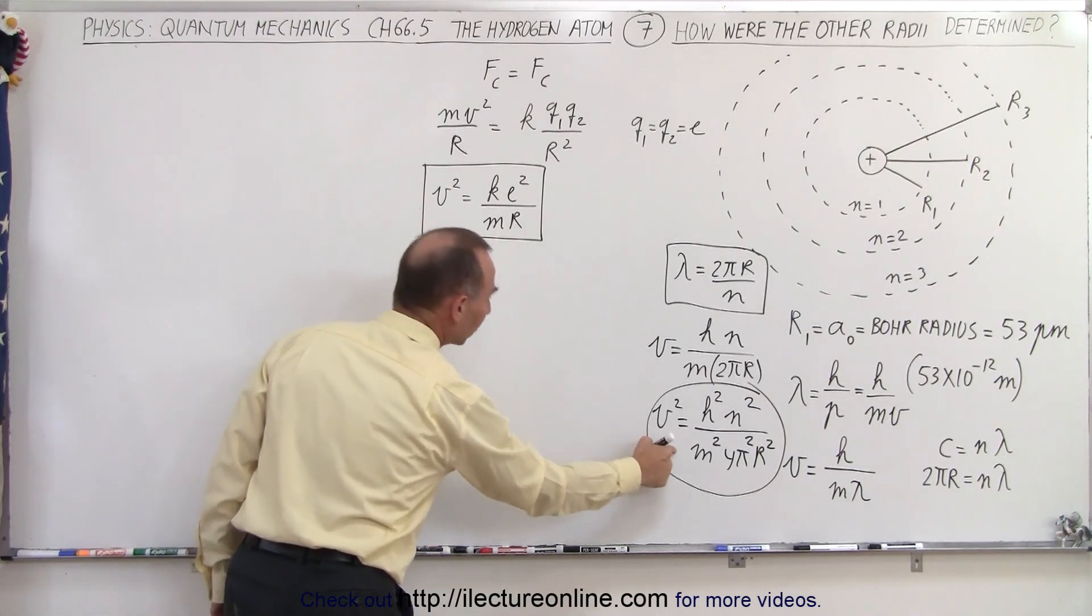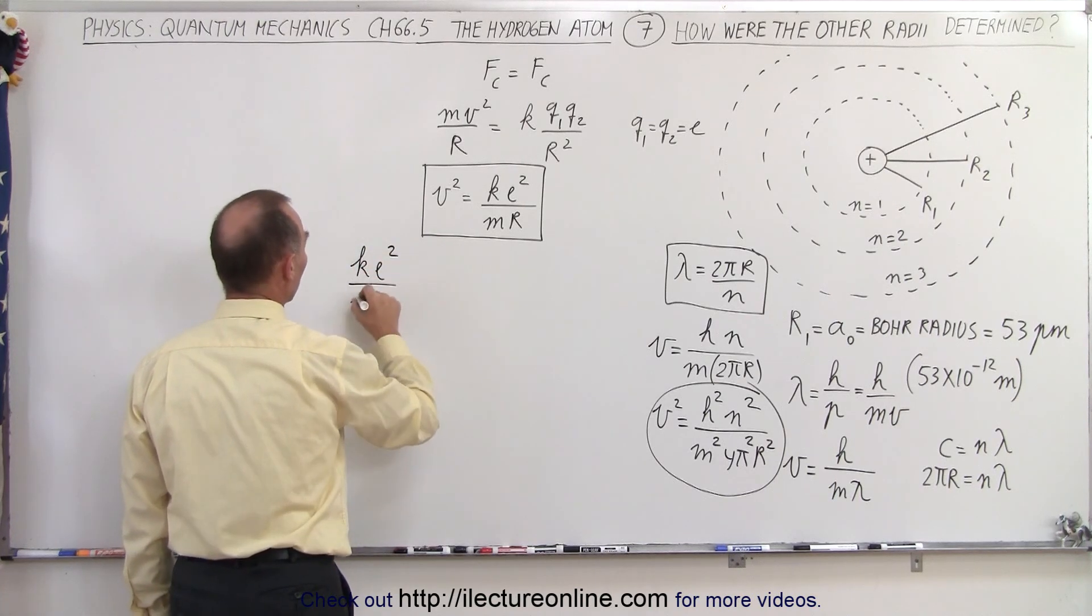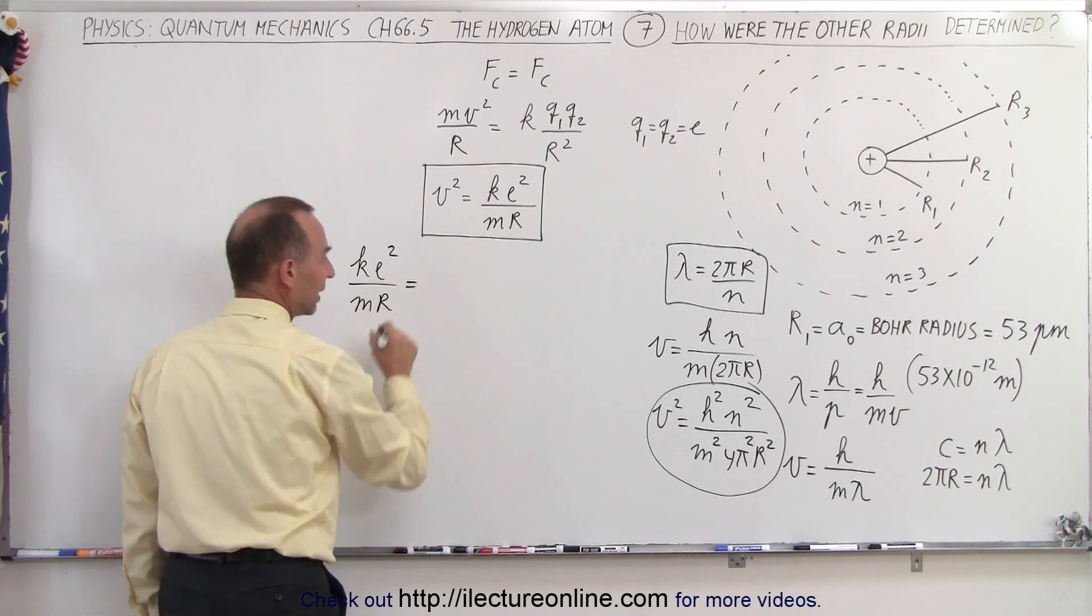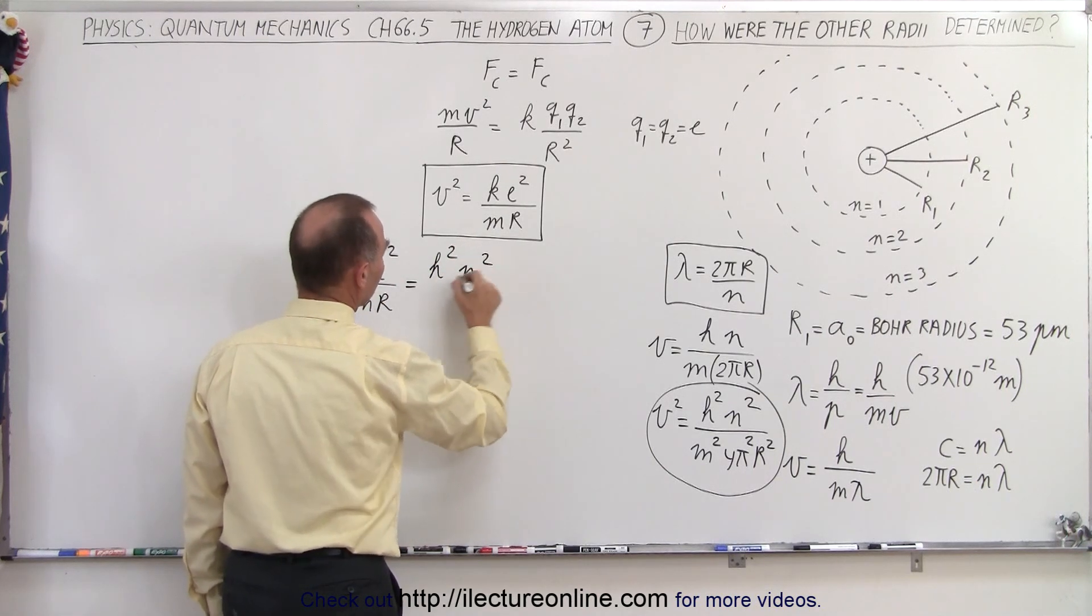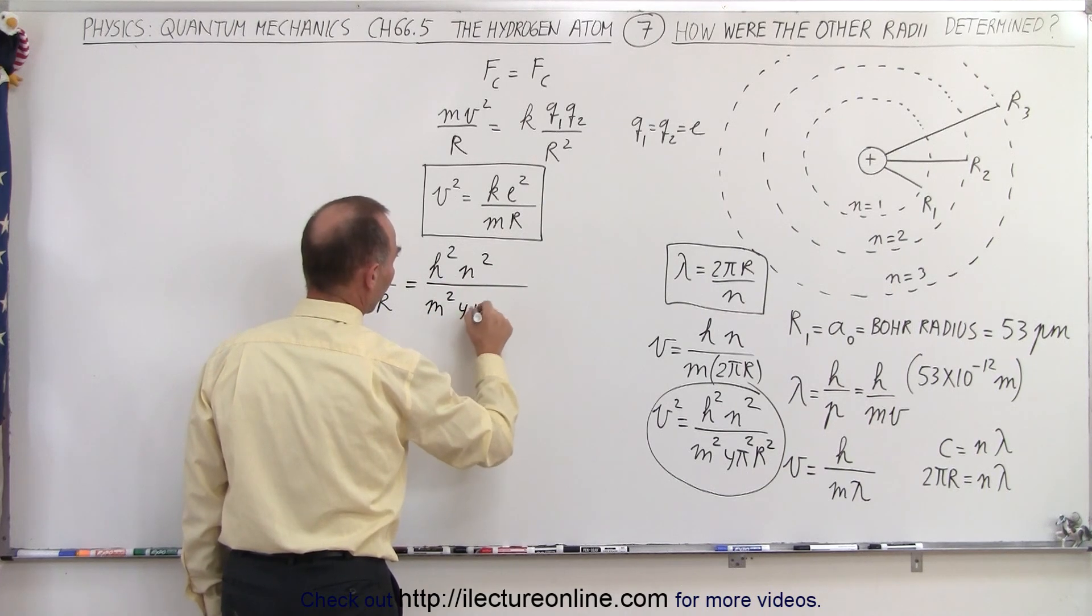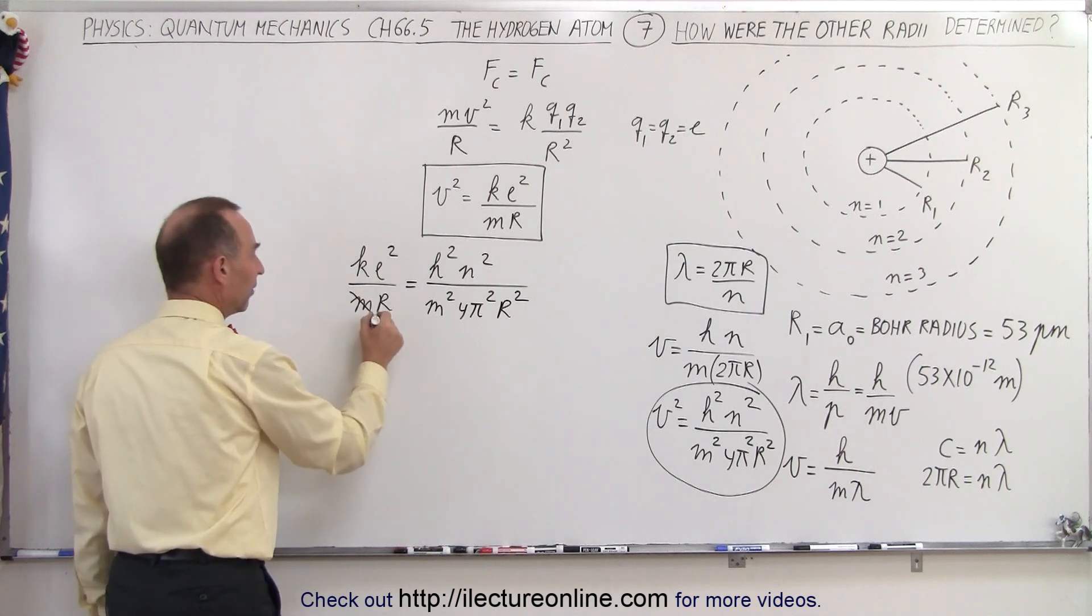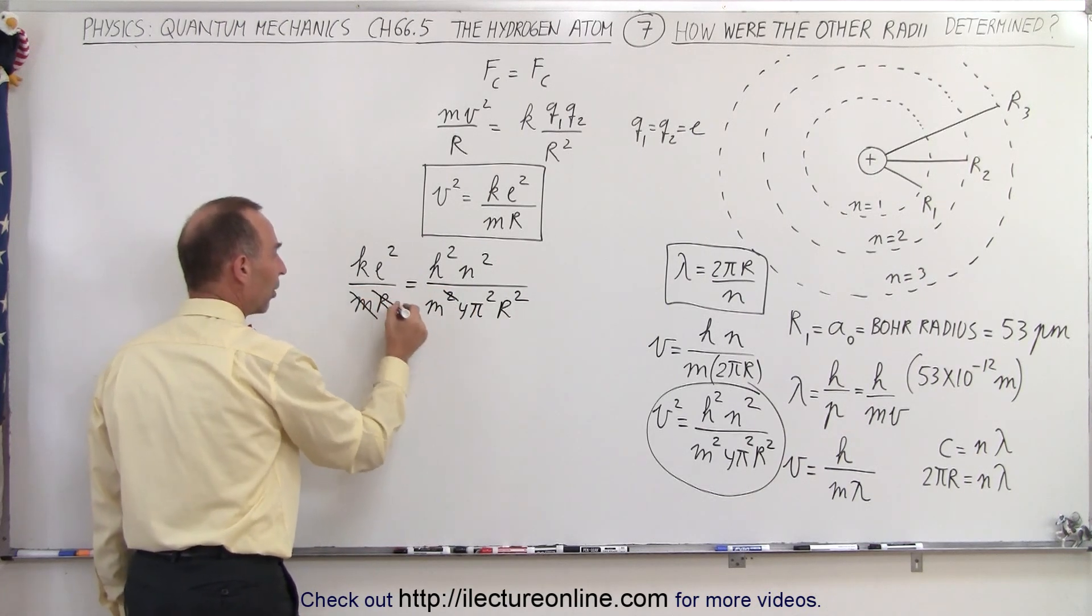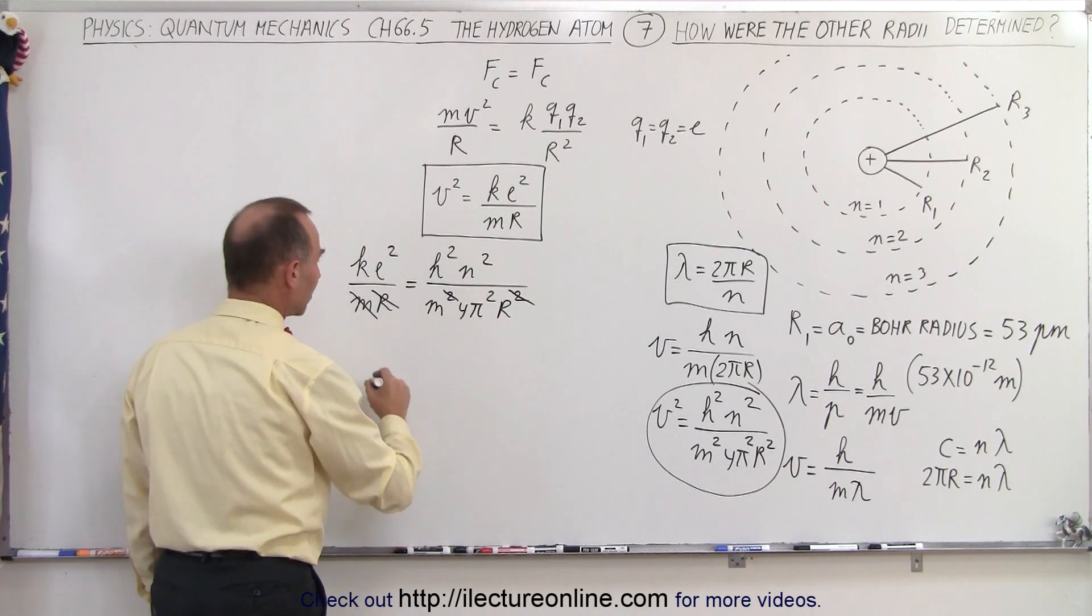So setting this equation equal to this equation, we can write that k e squared over m r must therefore equal H squared n squared divided by m squared 4π squared r squared, and again, this m will cancel out with that m, this r will cancel out with that r. Now we're going to solve for the only r that's left in the equation.